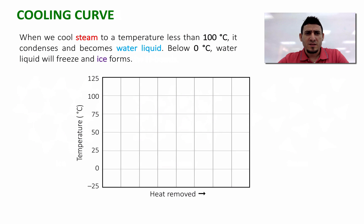Now let's move on to discuss the cooling curve. When we cool steam to a temperature less than 100 degrees, it condenses and becomes water liquid. Below zero degree, water liquid will freeze and ice forms. Now we can record the cooling curve. The cooling curve looks the opposite of the heating curve, and the x-axis notice that we say heat removed.